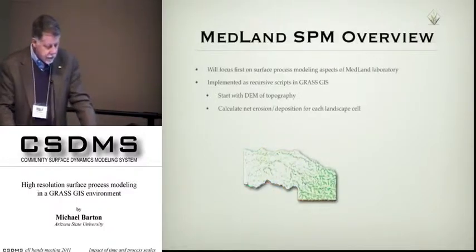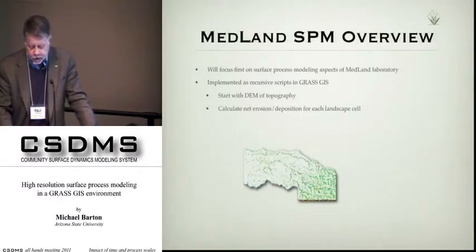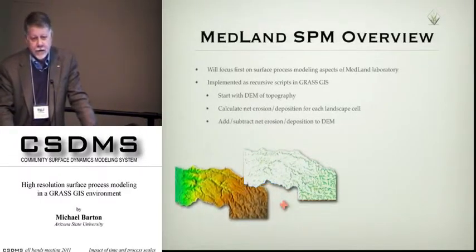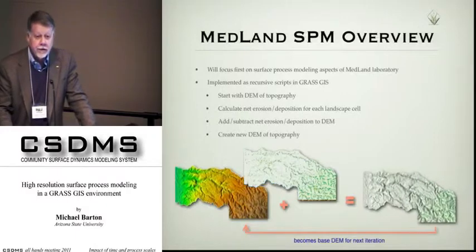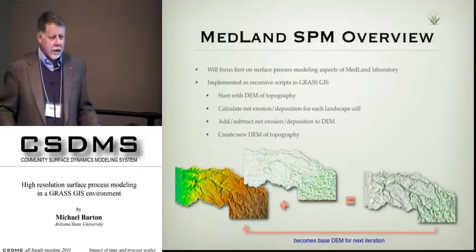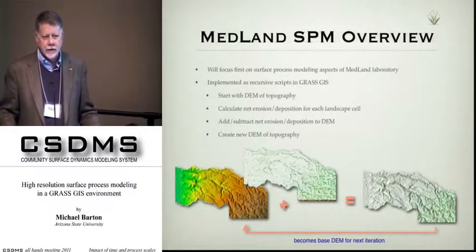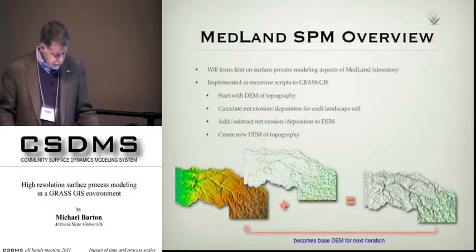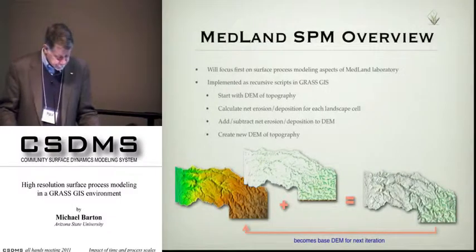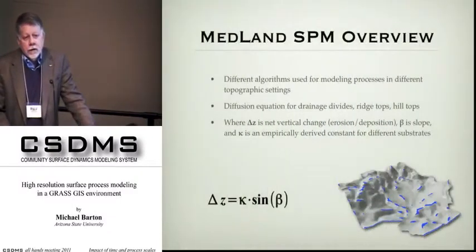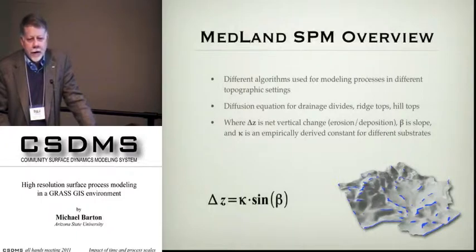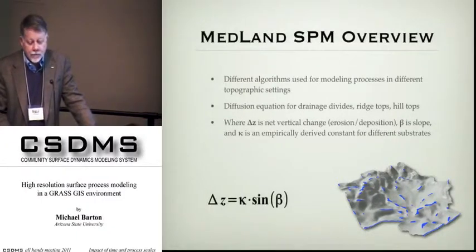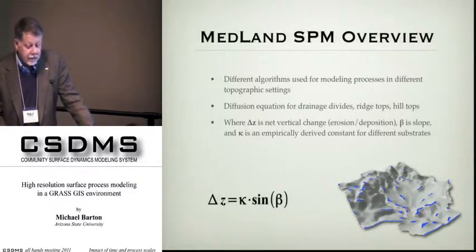We calculate net erosion and deposition for every cell, then add that back into the DEM to produce a new DEM. That becomes the base for the next cycle, and then we iterate this. We work at annual cycles and can iterate this for decades or centuries quite fast. As we all know, surface processes vary depending on where you are on the landscape, so we use different algorithms for modeling processes in different topographic settings.